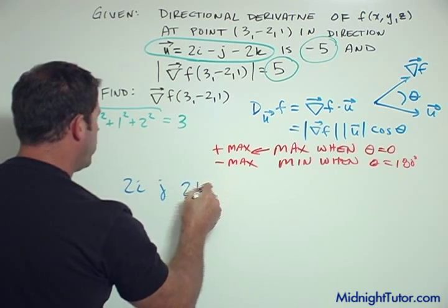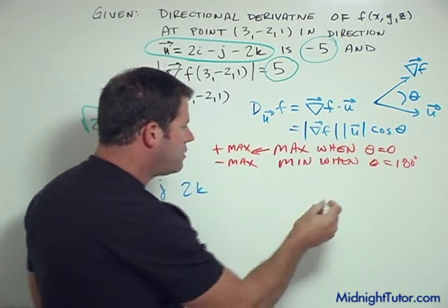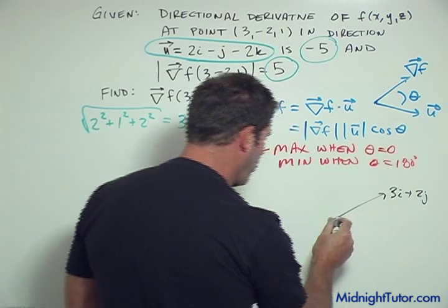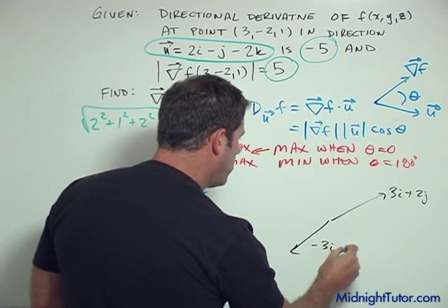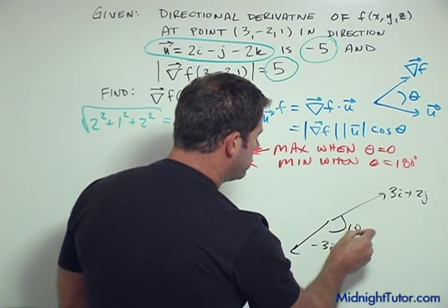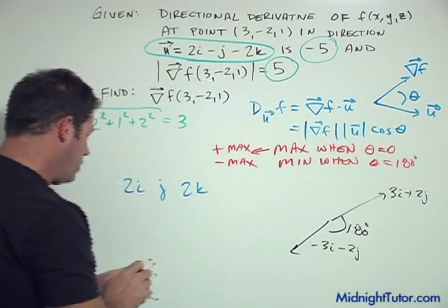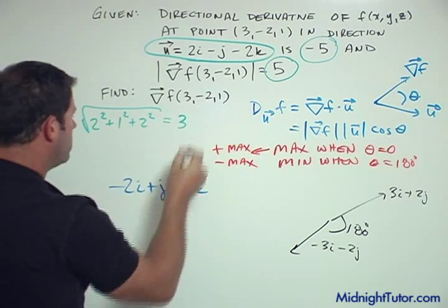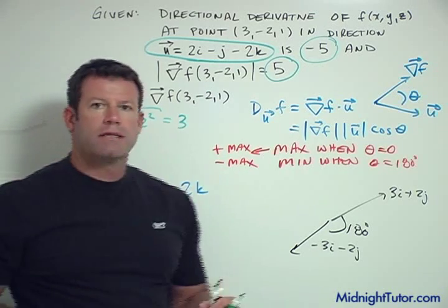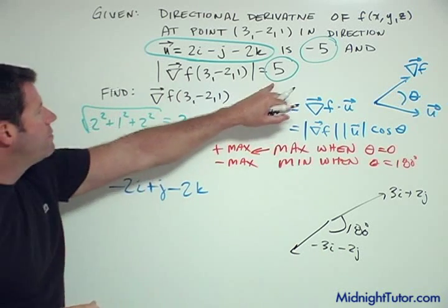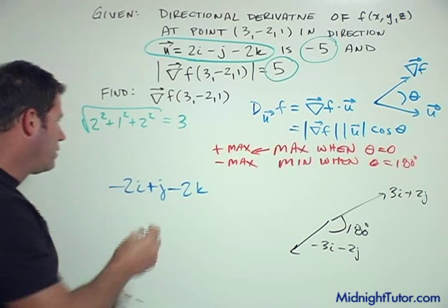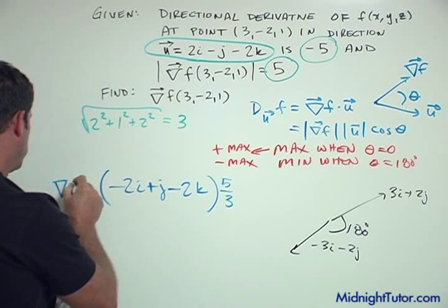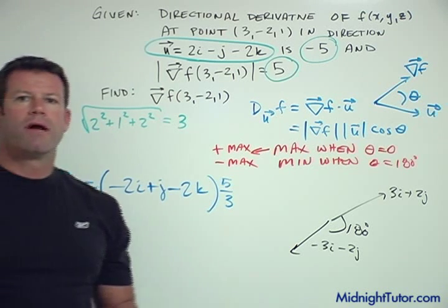But we want the opposite direction now. Notice if you have a vector 3i+2j, the opposite vector is going to be -3i-2j. So what we want to do to our vector here is we want to apply the opposite sign, so -2i+j-2k. So we've got the direction part, but now we have to have a gradient that has a magnitude of 5. This thing has a magnitude of 3, so we have to multiply the whole thing by 5/3, and so that then is the gradient.